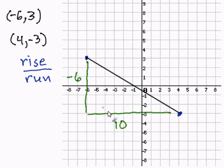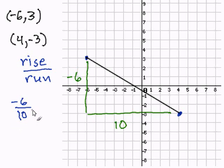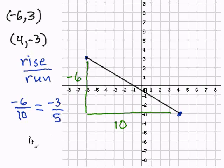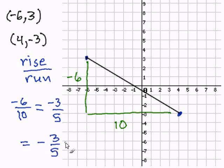Now let's put these two numbers in the fraction form of rise over run. So our rise would be negative six and our run would be ten. I should reduce whenever possible — negative six and ten can be reduced by two, giving us negative three over five. The slope between these two points is negative three fifths, and this completes my problem.